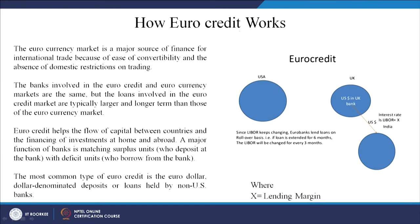How does the euro credit work? The euro currency market is a major source of finance for international trade because of ease of convertibility and the absence of domestic restrictions on trading. The banks involved in euro credits and the euro currency markets are the same, but the difference is that loans in the euro credit market are typically much larger and longer-term in nature. Euro credits help the flow of capital between countries and the financing of investments at home and abroad.